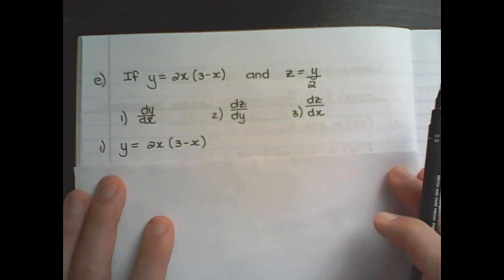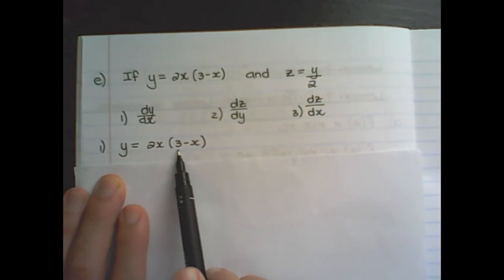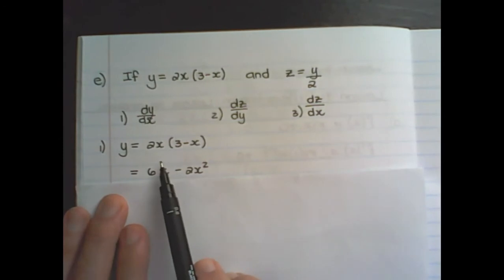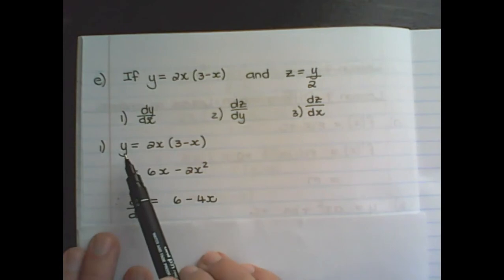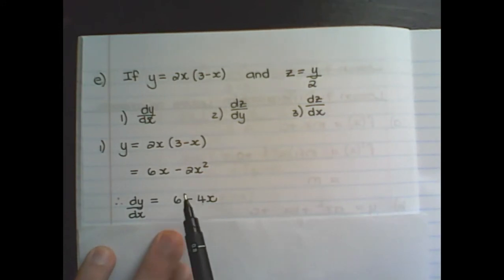Let us start with dy/dx. So y is equal to 2x times 3 minus x. If I multiply out I have 6x minus 2x square. Therefore dy/dx is 6 minus 4x. I simply apply the rule of differentiation on each term individually, and notice I am taking the equation of y and I am differentiating only.